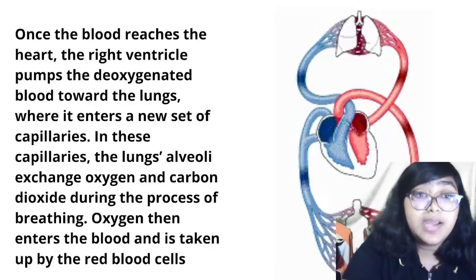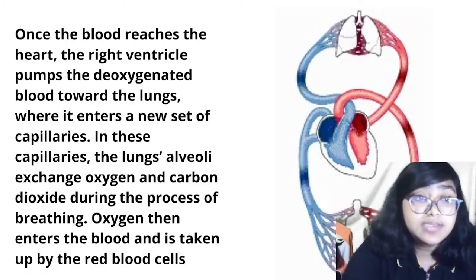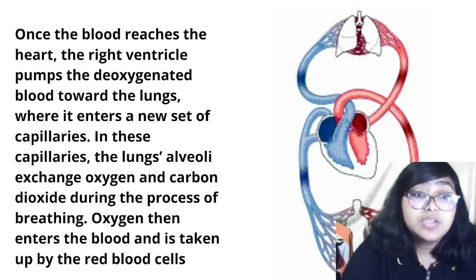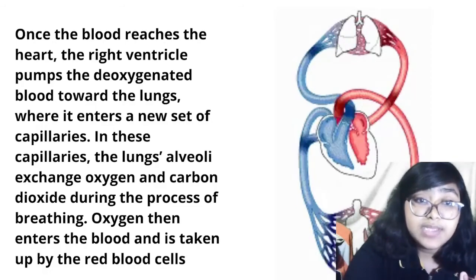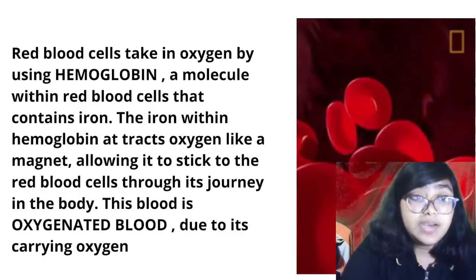Deoxygenated blood travels through the vena cava and enters into the right atrium. Once the blood reaches the heart, the right ventricle pumps the deoxygenated blood towards the lungs, where it enters a new set of capillaries. In the lungs, the alveoli exchange oxygen and carbon dioxide during breathing. The oxygen then enters the blood and is taken up by the red blood cells.